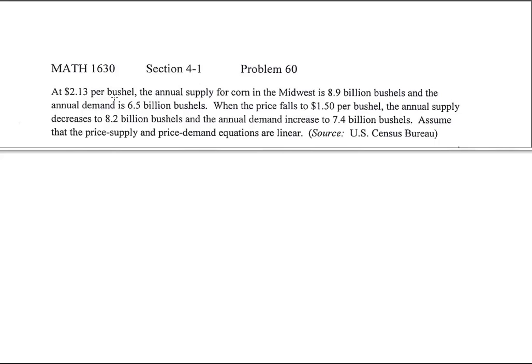At $2.13 per bushel, the annual supply for corn in the Midwest is 8.9 billion bushels. Annual demand is 6.5 billion. When the price falls to $1.50 per bushel, the annual supply decreases to 8.2 billion bushels, but the annual demand increases to 7.4 billion bushels.